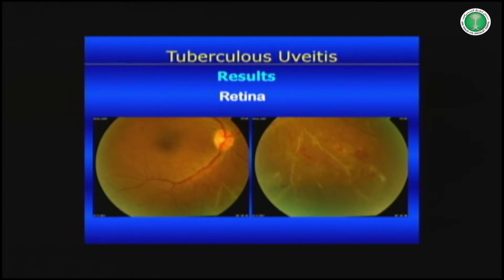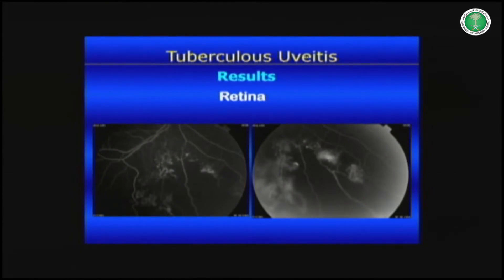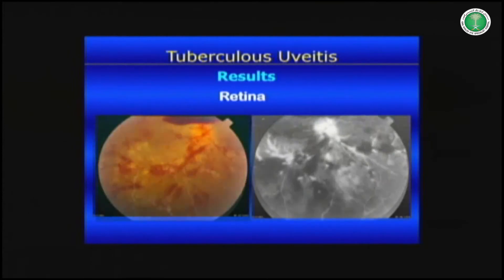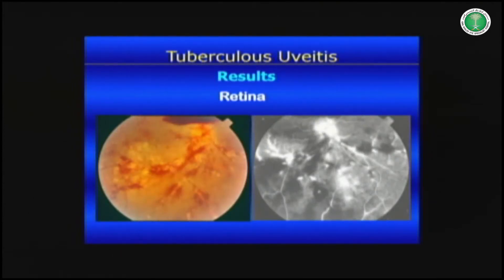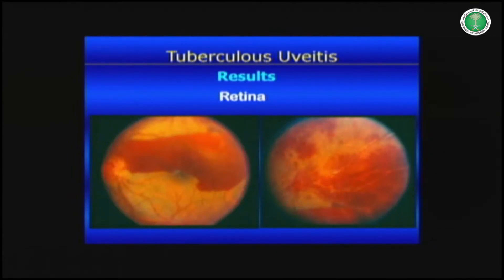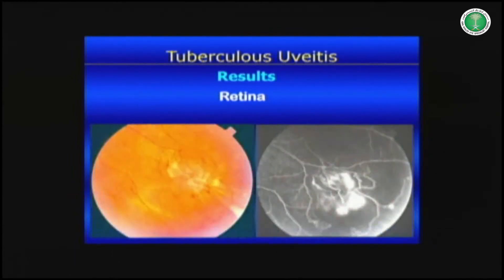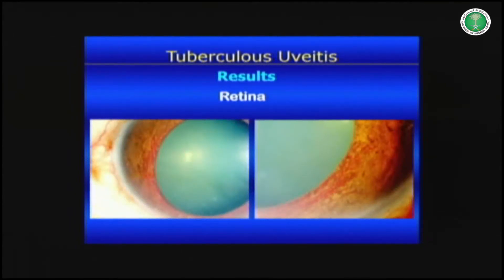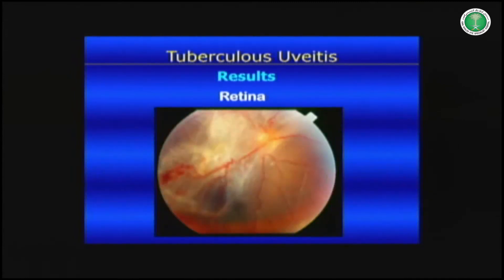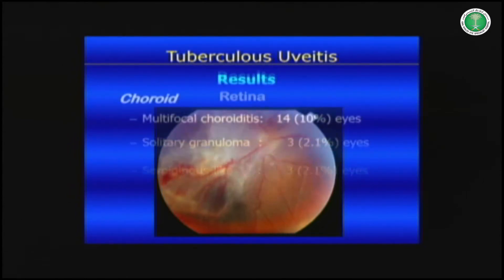Neovascularization complicating retinal ischemia and large areas of retinal non-perfusion caused by occlusive vasculitis are clearly visible on angiography. Patients can present with pre-retinal hemorrhage and neovascularization on the optic nerve. Patients can also present with rubeosis irides — the cause being occlusive vasculitis causing retinal ischemia. At the end stage, traction retinal detachment occurs as a result of vasoproliferative disease.